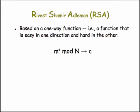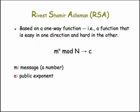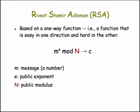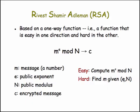So what makes RSA hard? What protects RSA from Eve? It's also based on a one-way function — our familiar modular arithmetic function, which is easy in one direction and hard in the other. In this case, the M in this expression represents the secret message being communicated. E is a public exponent — it's part of the public key. N is a public modulus, also part of the public key. And C is the resulting encrypted message. It's easy to compute M to the E mod N knowing M, E, and N, but it's very difficult — it's intractable — to find M given the encrypted message plus the public key E and N.